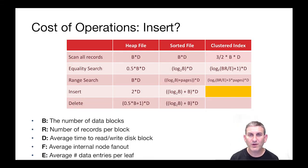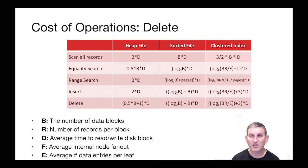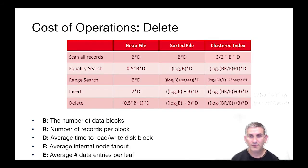Insertion is straightforward: we walk down the tree as with equality search to find the insertion location, then update the leaf level and the heap file. Assuming we're lucky and don't need a split — which is true most of the time — the cost is log_F(BR/E) * D plus three additional IOs: one to fetch the heap file page and two more to write the updated leaf page and heap file page. Deletion has the same cost, modifying one leaf-level page and one heap file page.